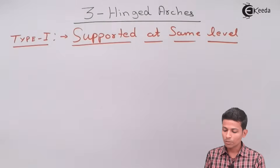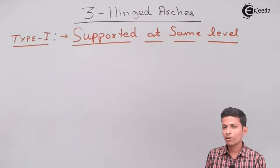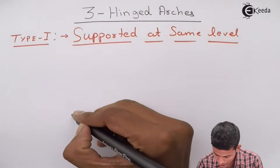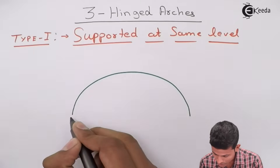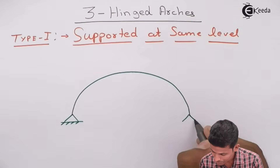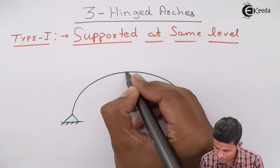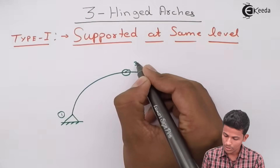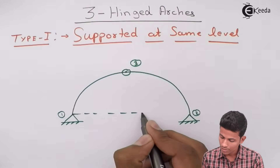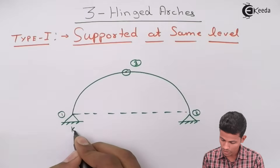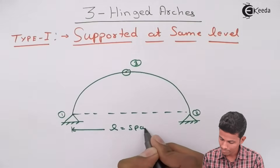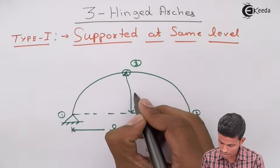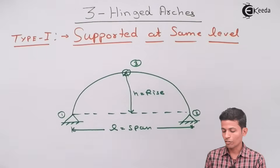3-Hinged Arches type: supported at the same level. First, let's see what an arch looks like. The name indicates it is a 3-Hinged Arch — this is hinge number 1, this is hinge number 2, and this is hinge number 3. This is your L, which stands for span. And this is your rise, which is the height of the arch.